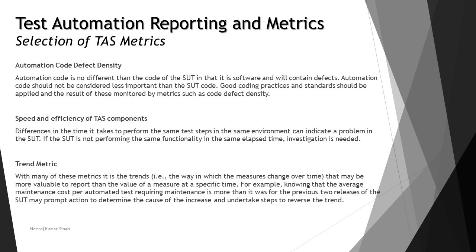The next metric is speed and efficiency of test components. When you execute a test, it may take longer in the future. For example, trying different configurations and different numbers of users — say with 5 users it runs within 10 seconds, but with 50 users it may take 30 seconds or more. This can help determine if test components are reducing speed or response time, highlighting a performance issue or the need for tweaking to upgrade the system to meet the criteria.